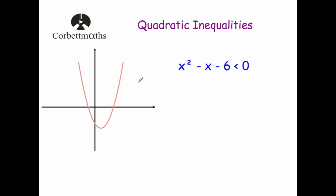Here's an example. We've got the graph y equals x squared minus x minus 6, and we're going to solve the inequality x squared minus x minus 6 is less than 0. If you look at the graph, this is the x-axis and this is the y-axis. Whenever the expression is less than 0, you can see it's going to be below the x-axis — that's this section of the graph. What I'm going to do is find what values those x-intercepts are, explore some values, and find our solutions.